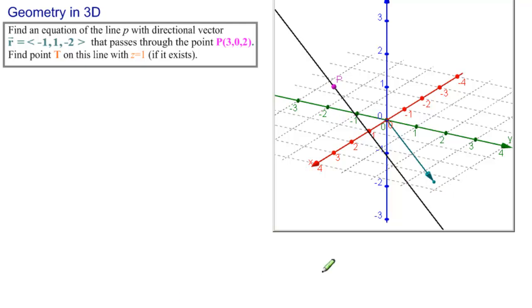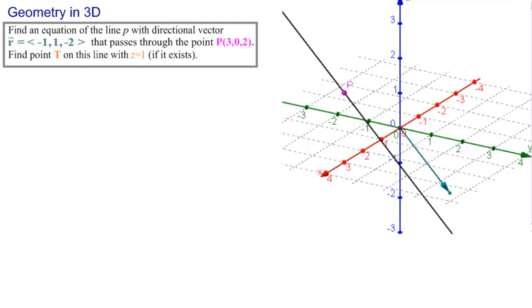So we're looking for an equation of this line. There are infinitely many equations of this line; we're going to find one of them. For this particular problem, we're going to find the parametric form of the line.